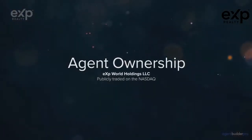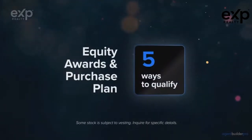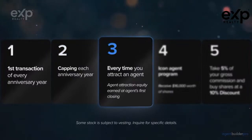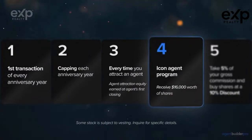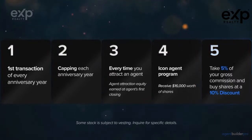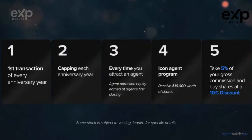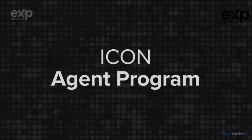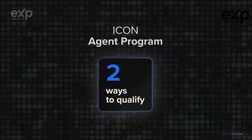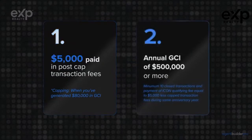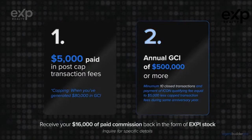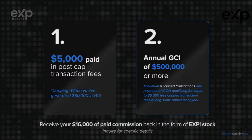Every eXp agent has the opportunity to become a shareholder in eXp World Holdings. Earn equity awards for closing your first transaction each year, capping each year, and every time an agent you attracted does their first transaction. You can elect to take 5% of your gross commission per transaction and buy company stock at a 10% discount — ticker symbol EXPI. The Icon Agent Program rewards top producers: qualify with $5,000 in post-cap fees or $500,000 annual GCI with at least 10 closed transactions, and you receive 100% of your cap back in company stock.